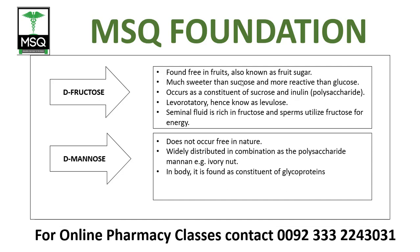D-fructose is found free in fruits and is also known as fruit sugar. It is much sweeter than sucrose and more reactive than glucose. It occurs as a constituent of sucrose and inulin — inulin is a polysaccharide. It is laevorotatory, hence known as levulose. In biochemistry, the different names given to compounds always have a reason behind them; in fructose's case, it is called levulose because it is laevorotatory.